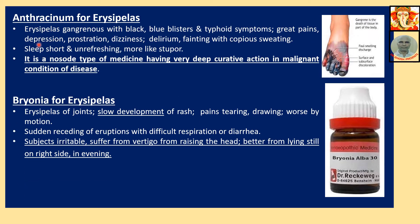Anthracinum for Erysipelas: Erysipelas gangrenous with black and blue blisters, typhoid symptoms. Great pains. Depression and prostration. Dizziness. Delirium. Fainting with copious sweating. Sleep short and unrefreshing, more like stupor. Anthracinum is a nosode-type medicine having very deep curative action in malignant conditions of disease. This is characteristic of gangrene — the particular part becomes bluish or blackish, and ultimately the whole part is necrosed, that is destroyed.